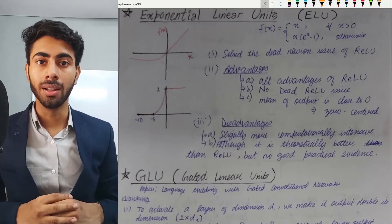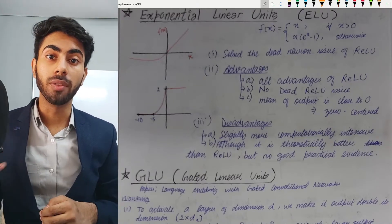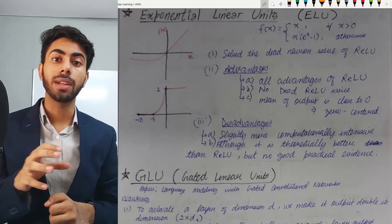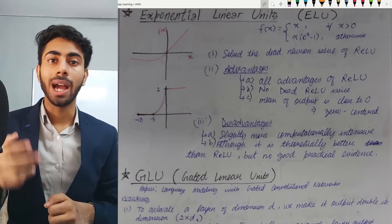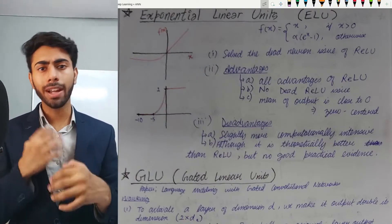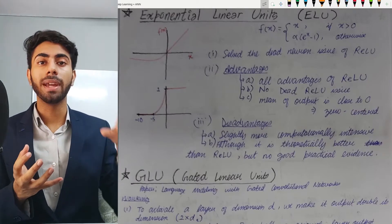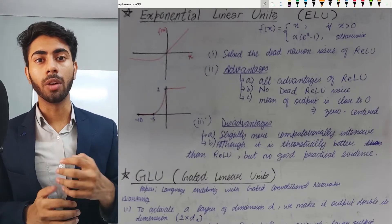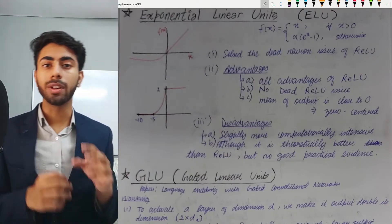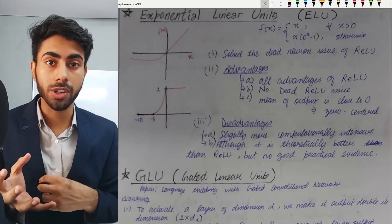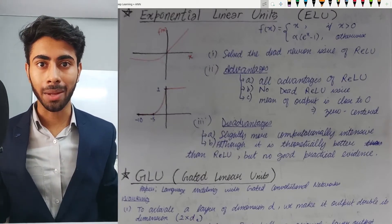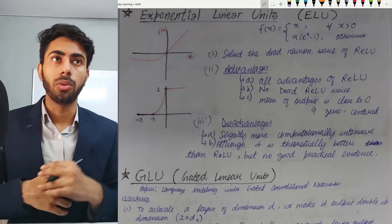Hello everyone, welcome back to my channel. In the previous video we learned about ReLU and its variants — how ReLU is better than sigmoid and tanh, how it solved their problems, and how the dying ReLU problem was solved by its variants, Parametric ReLU and Leaky ReLU. In this video we will be covering the third variant of ReLU, that is Exponential Linear Units or ELU, and after that we will deal with another activation function, GLU or Gated Linear Units. So without wasting any time, let's get started.